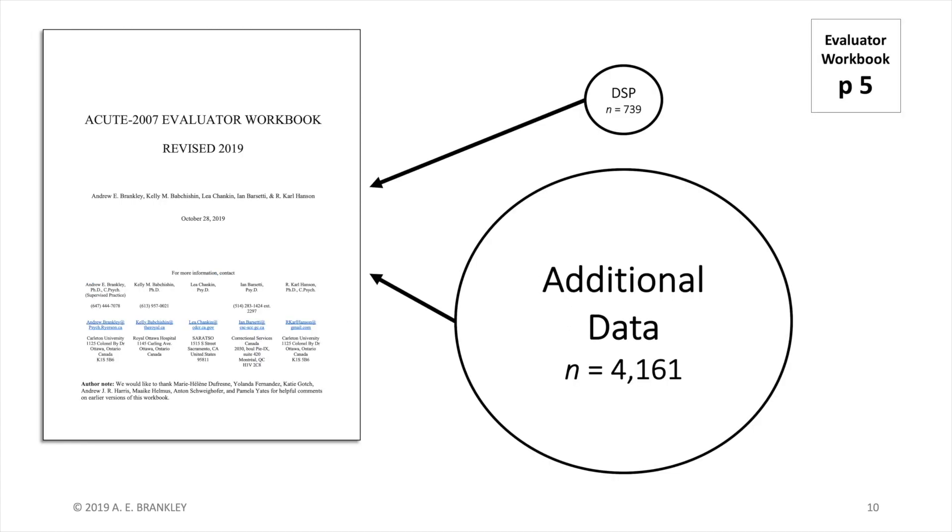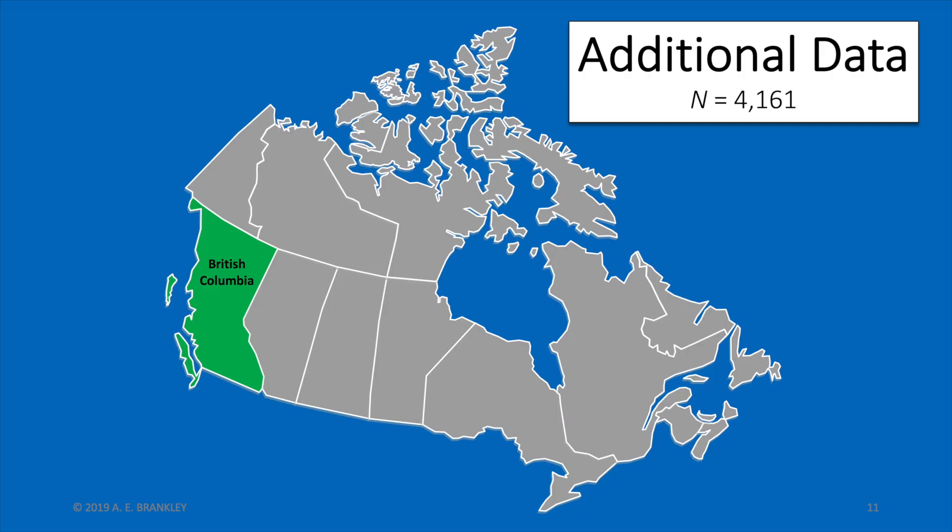Briefly, the new acute norms are based on the development sample, otherwise known as the Dynamic Supervision Project or DSP, and a large dataset taken from British Columbia. For those unfamiliar with Canada, British Columbia is Canada's most western province. Beginning in 2005, the province made it mandatory for all adult males on community supervision with a history of sexual crime to be scored on static, stable, and acute. Our sample represents seven years of data collection.